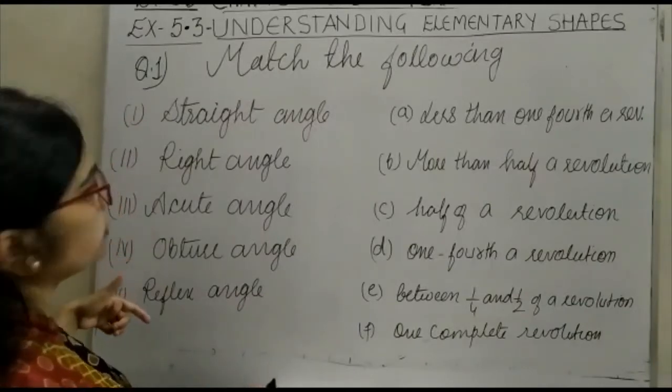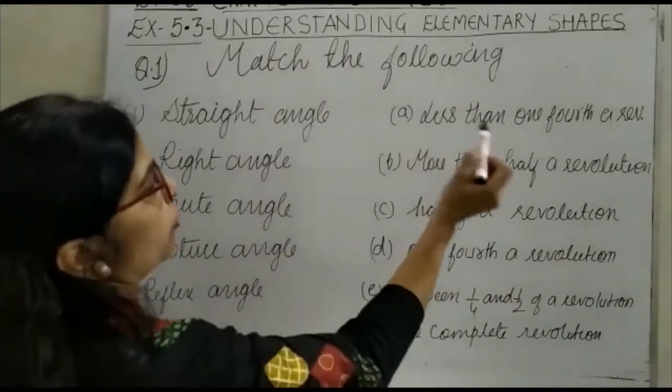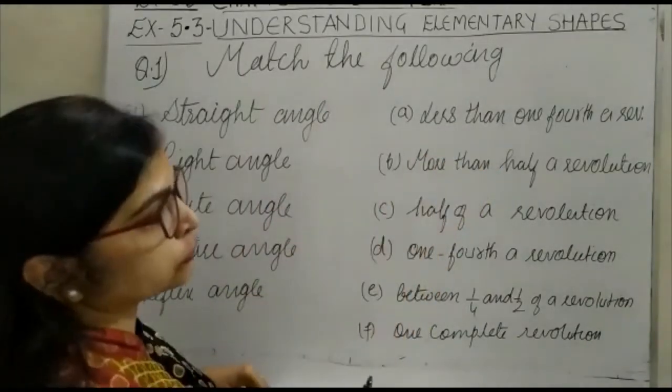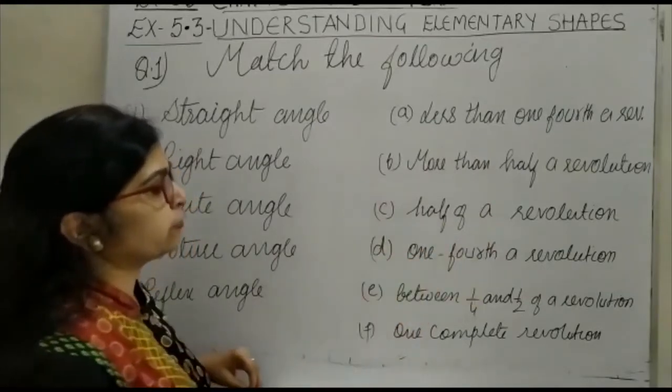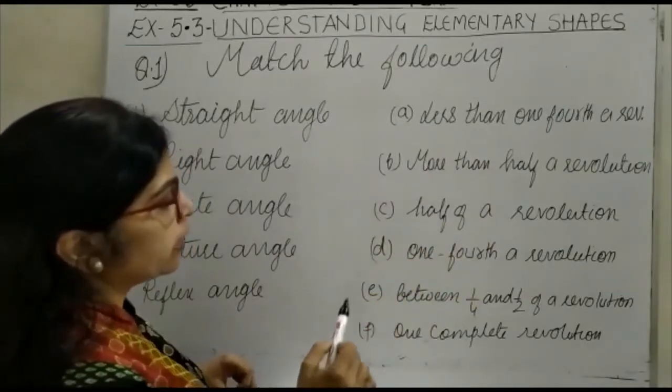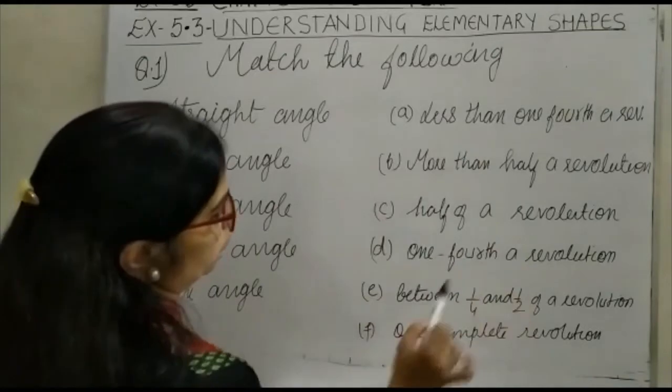On the right hand side, our options are: less than one fourth a revolution, more than half a revolution, half of a revolution, one fourth a revolution, between one fourth and half of revolution, and one complete revolution.